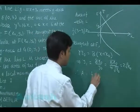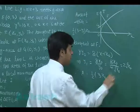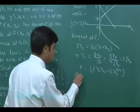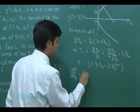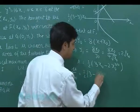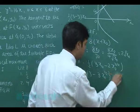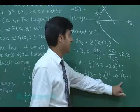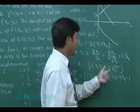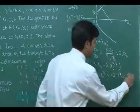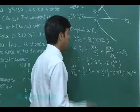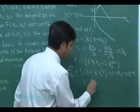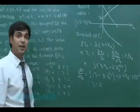Substituting y₁ = 2√x₀, the area of triangle EFG becomes ½·(3 − 2√x₀)·x₀ = ½·(3x₀ − 2x₀^(3/2)). Differentiating with respect to x₀ and setting equal to zero: ½·(3 − 3√x₀) = 0, giving x₀ = 1. So x₀ = 1, which means y₀ = 4·√1 = 4, and y₁ = 2√1 = 2.